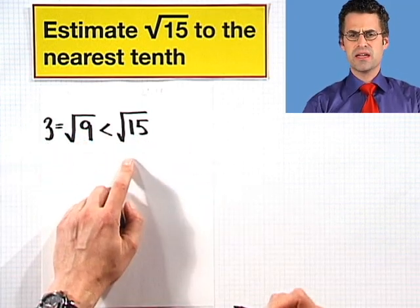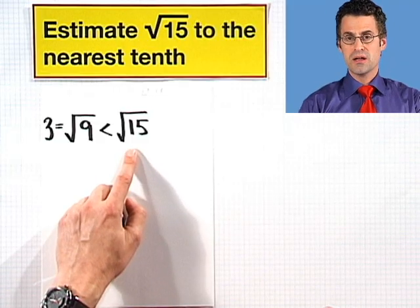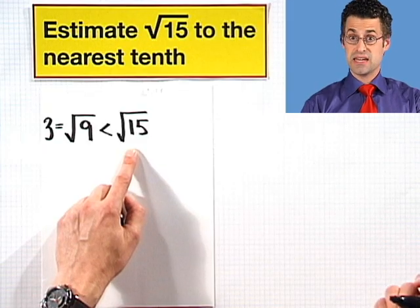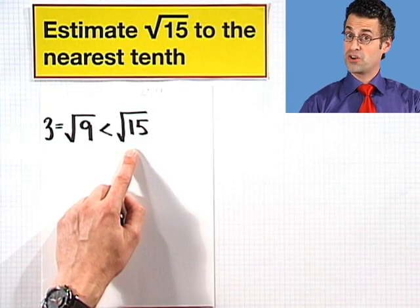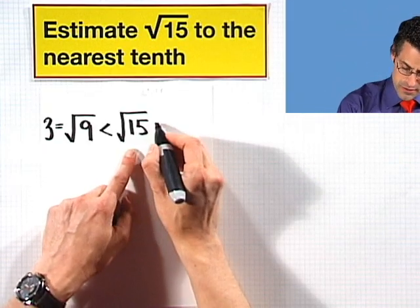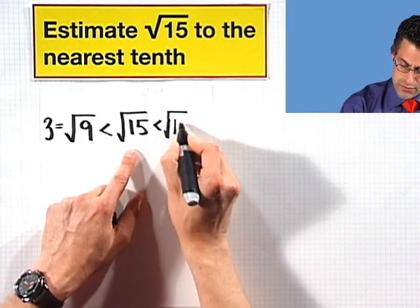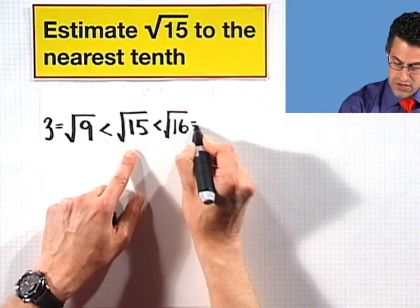Now can I think of a perfect square that's a little bit bigger than 15? Well if I think I realize that 16 is a perfect square, it's 4 squared, and it's a little teeny bigger than 15. So this is going to be slightly smaller than the square root of 16, which equals 4.